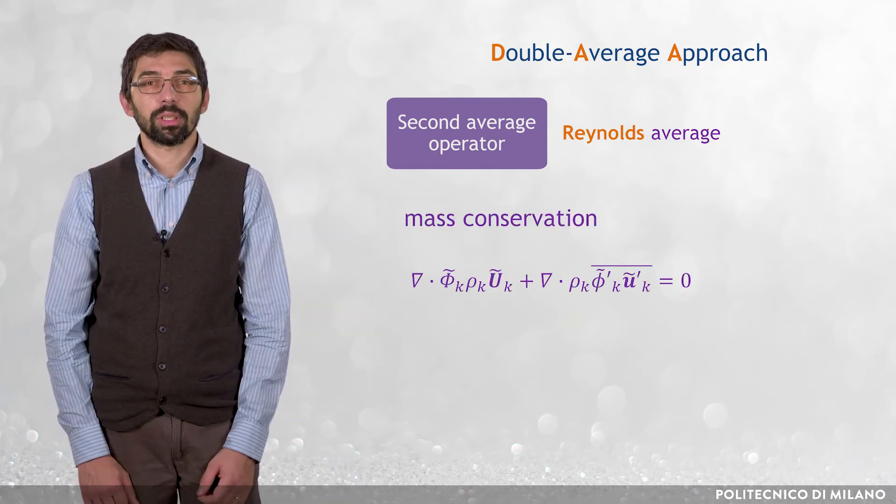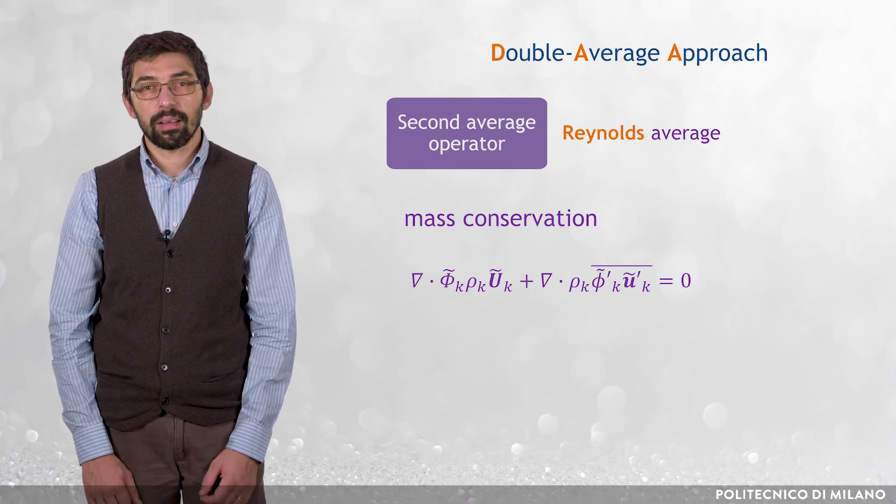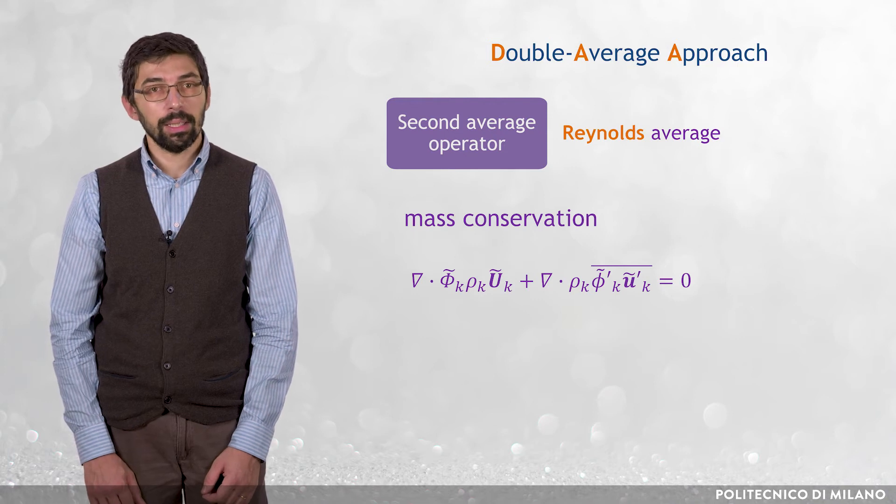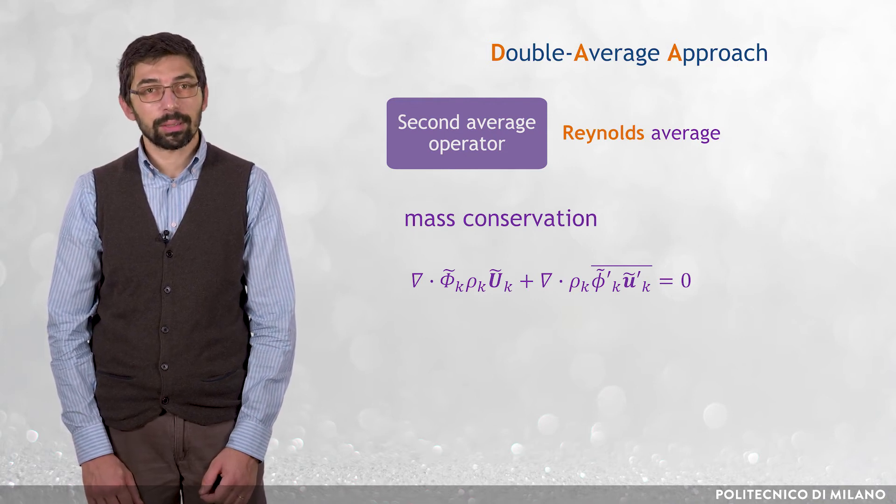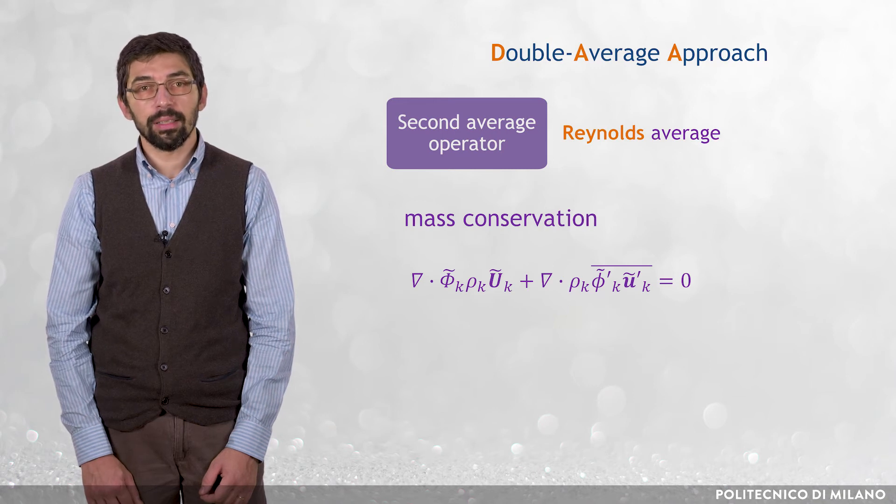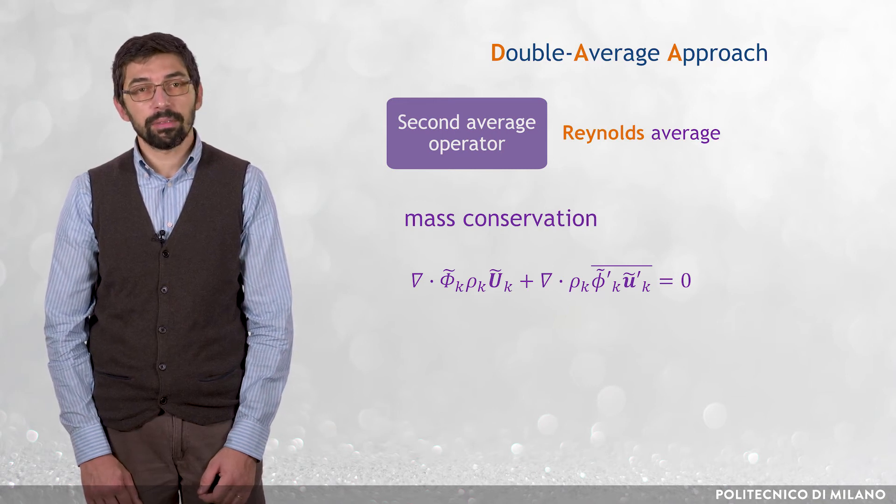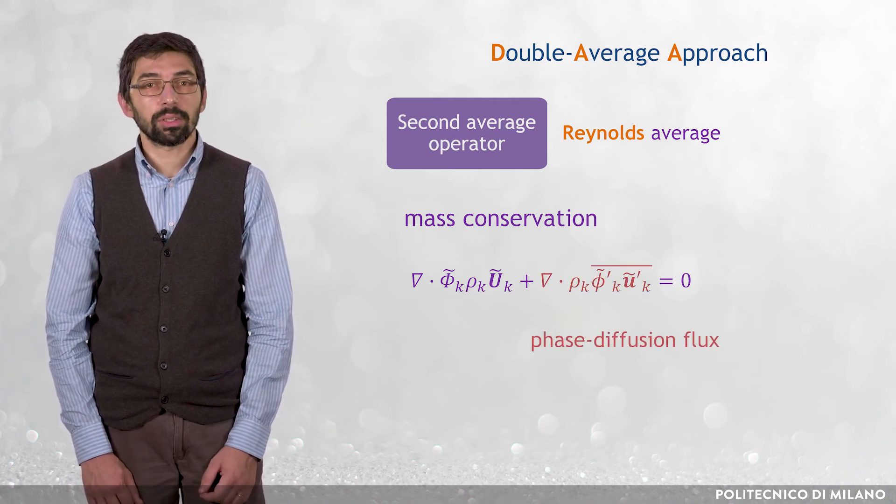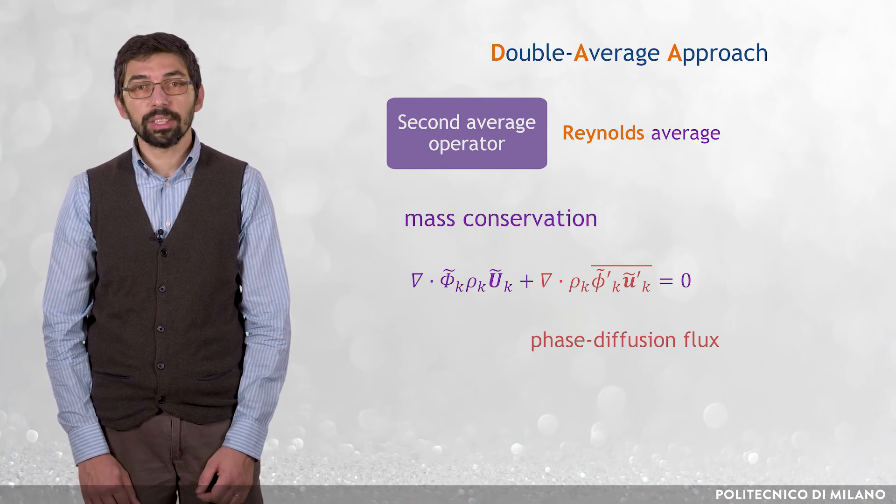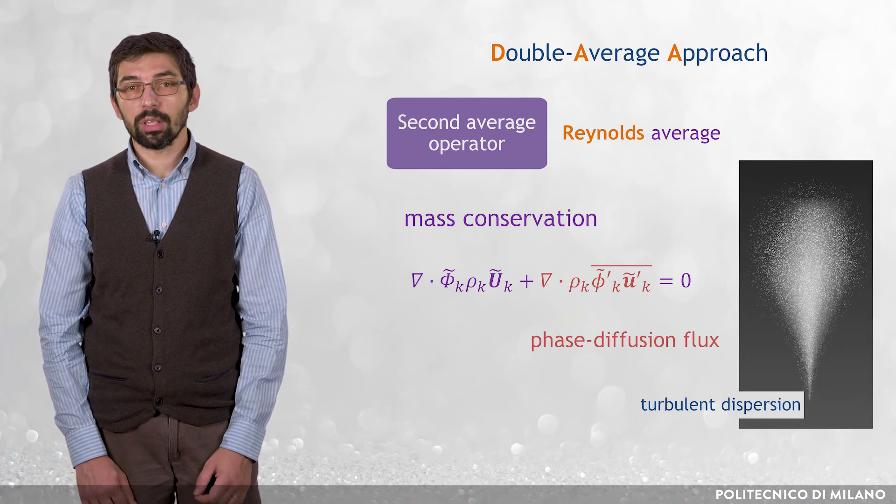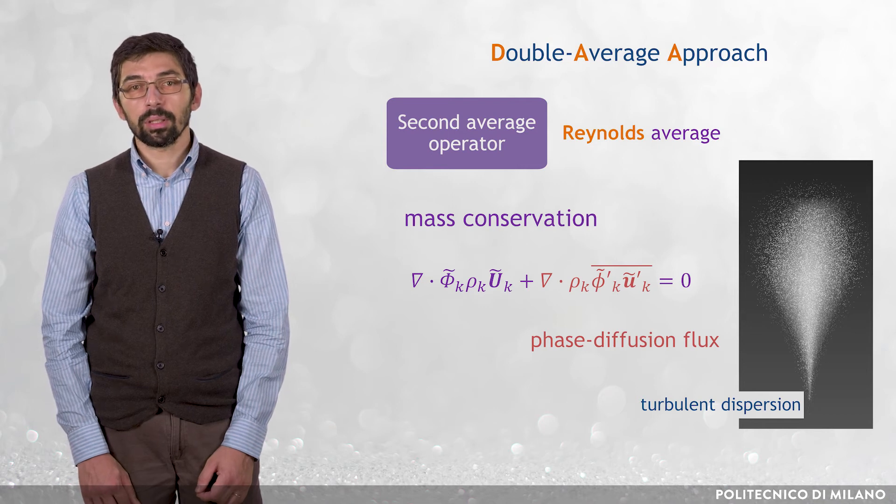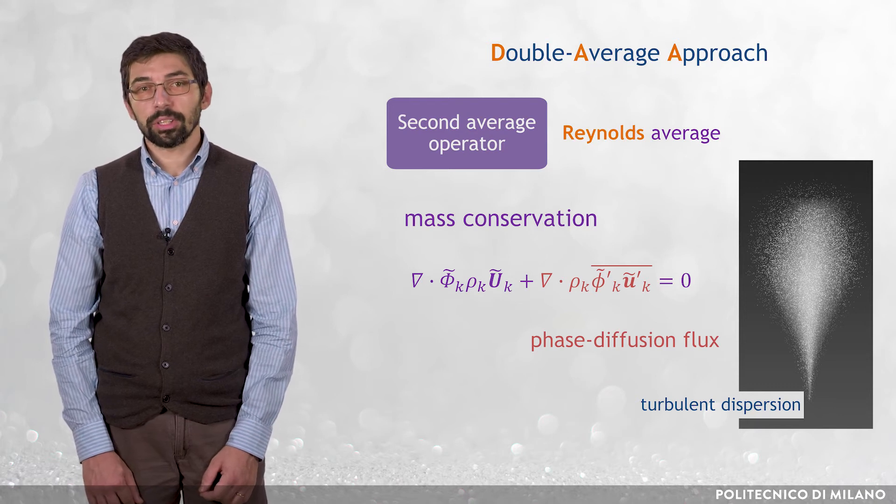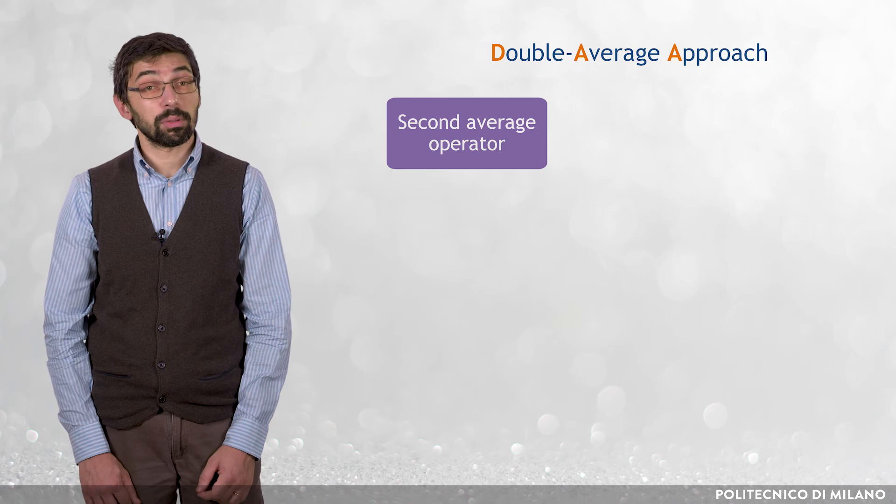For instance, in the mass conservation equation of phase k, there appears the term nabla dot the density of phase k, rho k, times the Reynolds average of the product between the fluctuating volume fraction tilde phi k prime times the fluctuating velocity tilde u k prime. This term is called phase diffusion flux and it is responsible for the modeling of the turbulent dispersion of solid particles caused by the turbulent fluid. Similar and even more complex correlation terms appear in the momentum conservation equations.